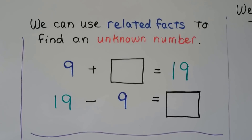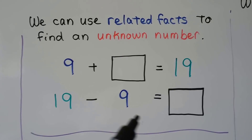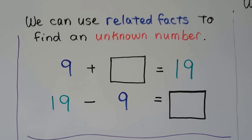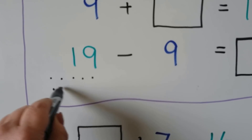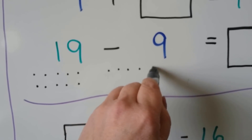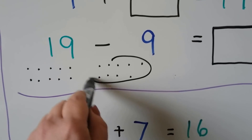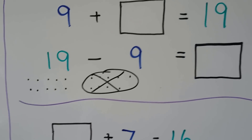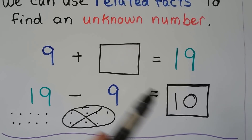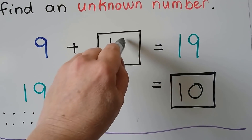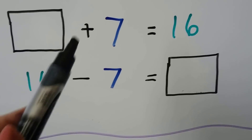We can use related facts to find an unknown number. We have 9 plus an unknown number is equal to 19. We can say 19 minus 9 equals that unknown number. If the addition or subtraction is hard, remember we can use counters — we make 19 dots. If we take 9 away, we have a group of 10 and a group of 9; removing the 9 leaves just the 10. So 19 minus 9 equals 10, and the unknown number is 10. 9 plus 10 equals 19.